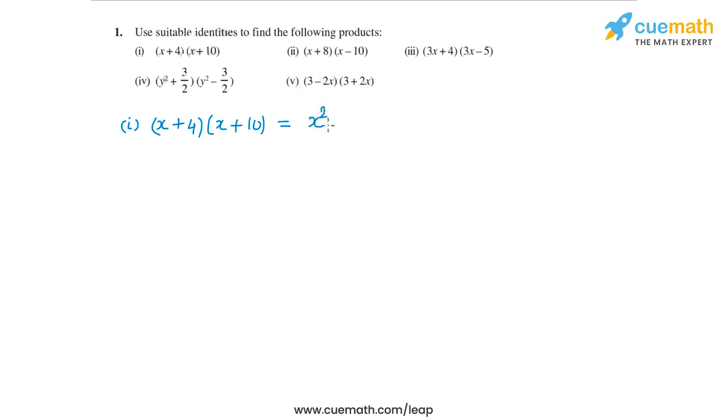So we'll have x² plus a plus b. So 4 plus 10, which is 14. So plus 14x plus a into b. So 4 into 10, that's 40. So x² + 14x + 40 is the answer to the first one.